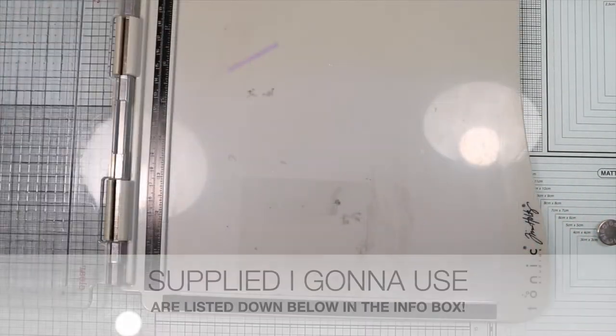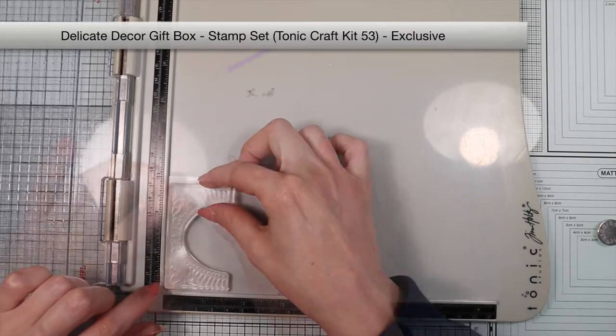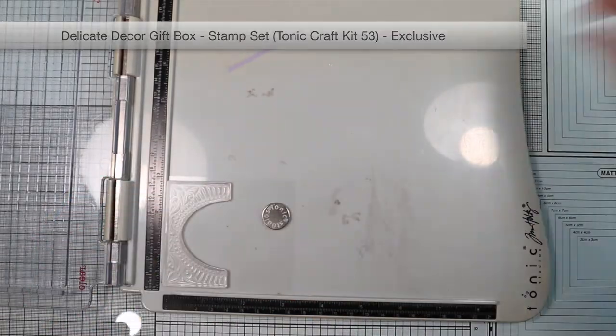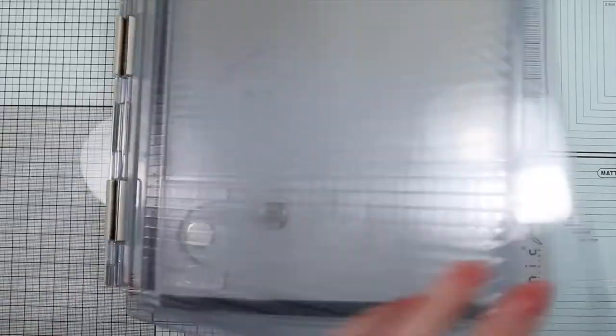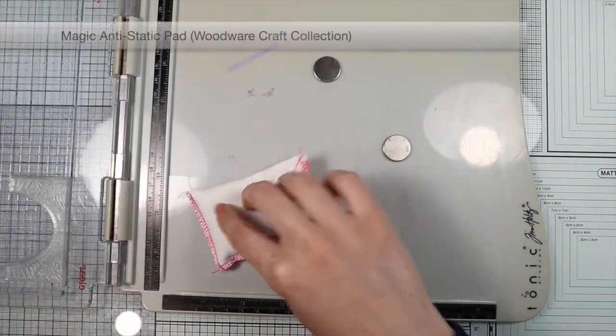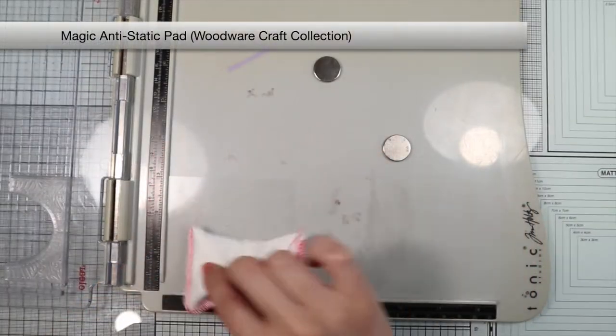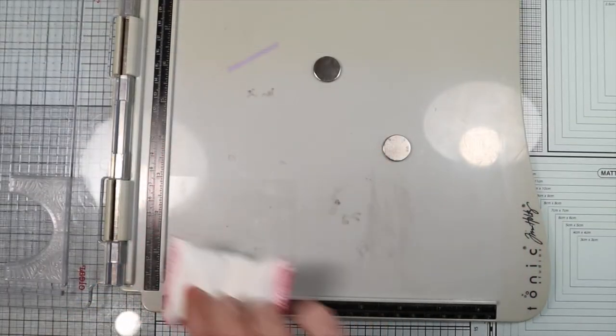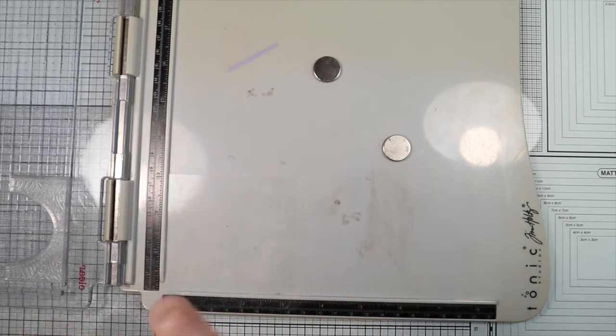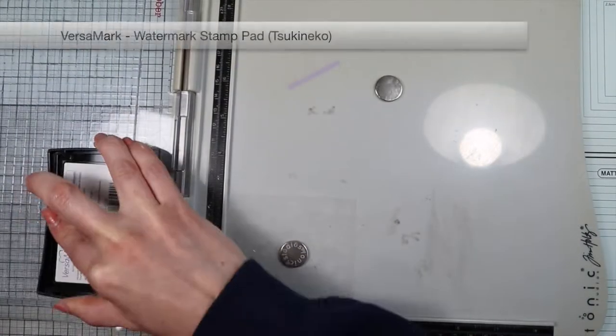So, I place the stamp on my stamping platform. I sprinkle some anti-static powder on the acetate. This powder will ensure that the embossing powder sticks only to the ink.